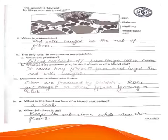Now question number eight. The diagram shows how the blood forms a clot to heal a wound in the skin. Here is blood clot formation, which involves platelets. What is a blood clot? Red cells caught in a net of fiber. It forms a clot. The tiny bits in the plasma are platelets. What are platelets? Platelets are bits of cells broken off from larger cells in the bone marrow. What part do platelets play in the formation of blood clots? They cause tiny fibers to form a net to get the red cells caught.